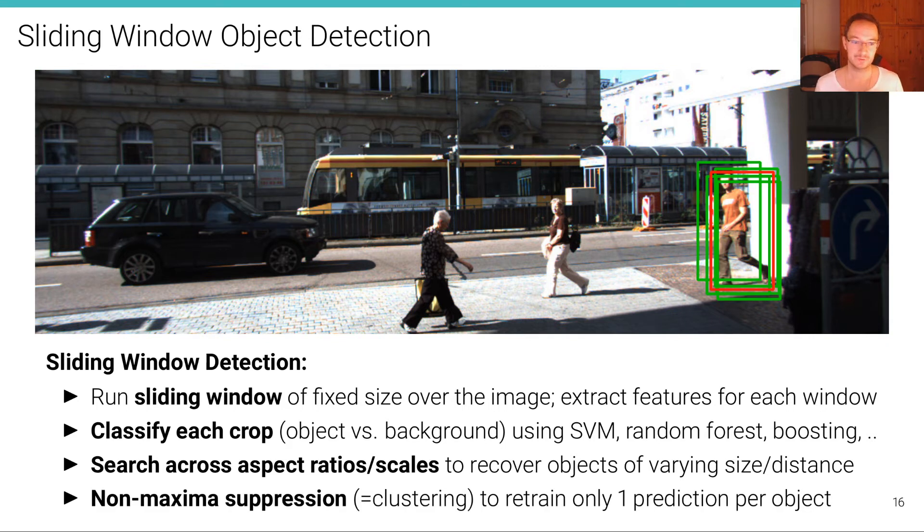The final step is to apply non-maximum suppression or clustering to retain only one prediction per object. The problem is that if we now slide this window through all possible locations, there will be some windows in the vicinity of the actual target object here in red that will also respond highly in terms of the classification score.